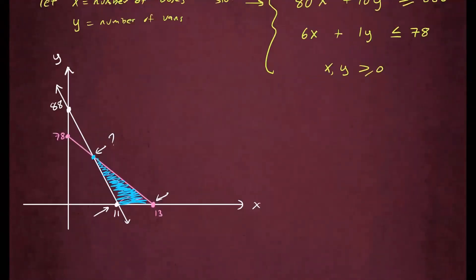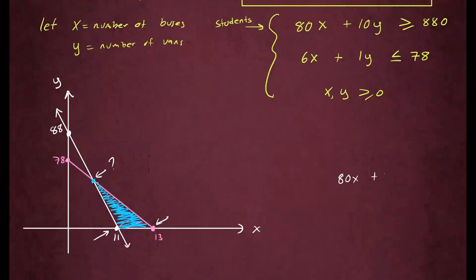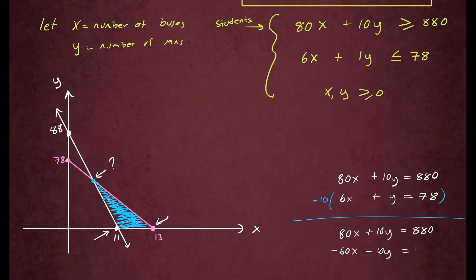So we're going to set them like this. You have 80x plus 10y equals 880. Then we have 6x plus y equals 78. We solve this using any method you like. I'm going to go ahead and use the process of elimination. I'll multiply this by a negative 10. So that gives me, for the first equation, it's just 80x plus 10y equals 880. For the second, I'm multiplying by negative 10. So I have negative 60x minus 10y equals negative 780. Now we can add them up.